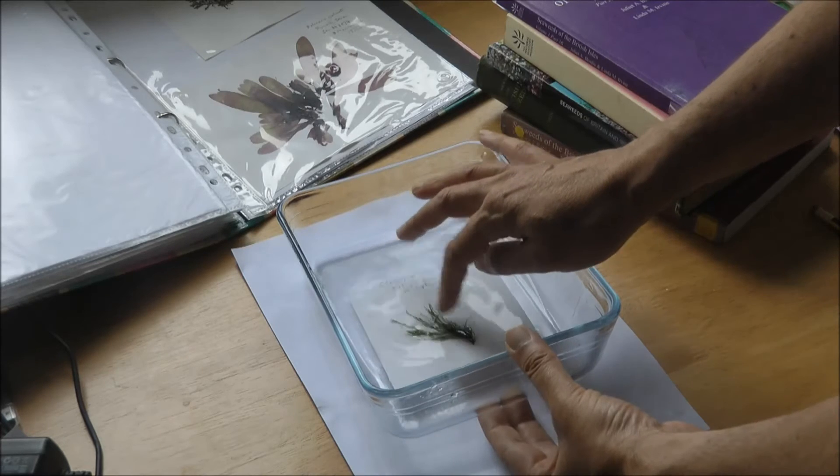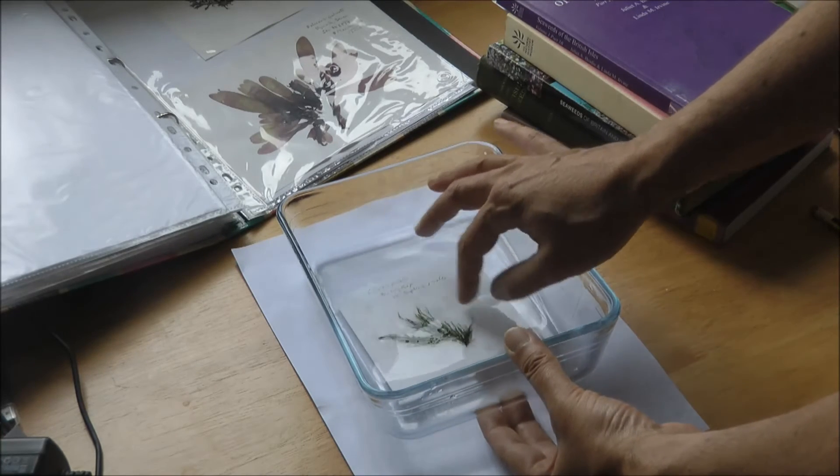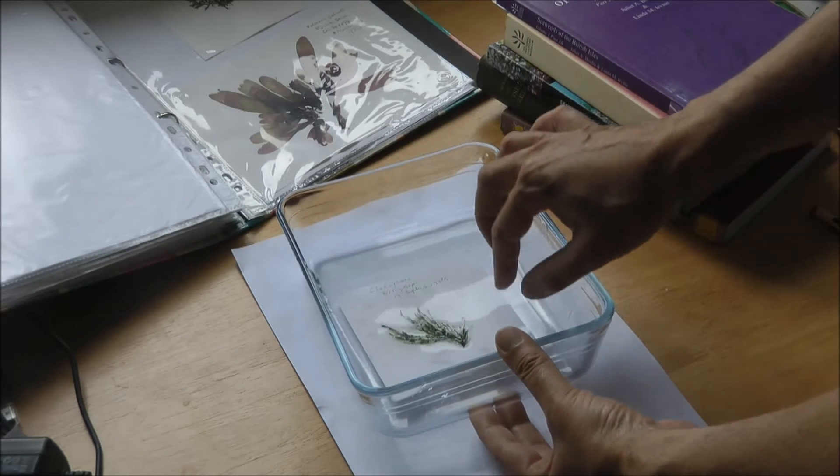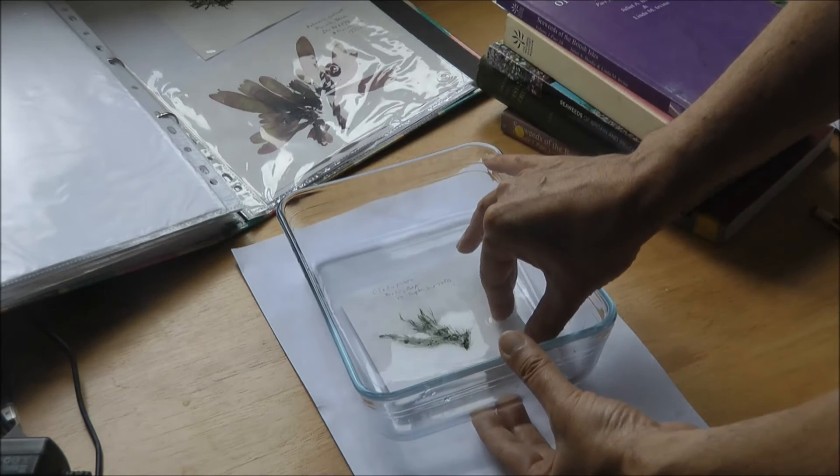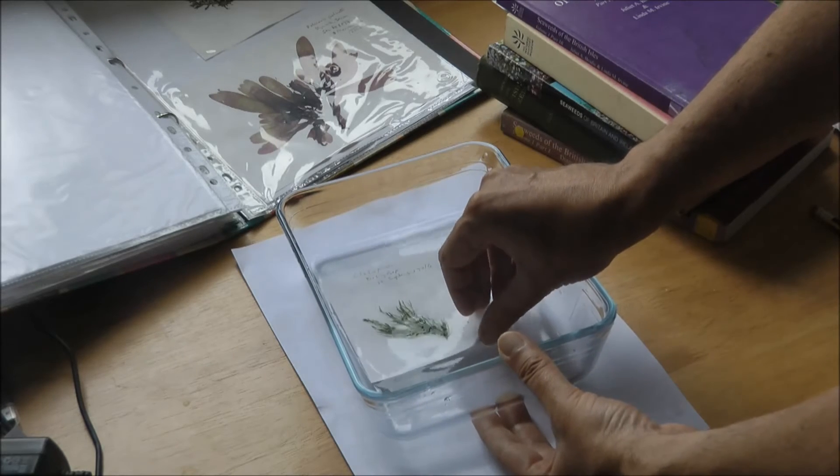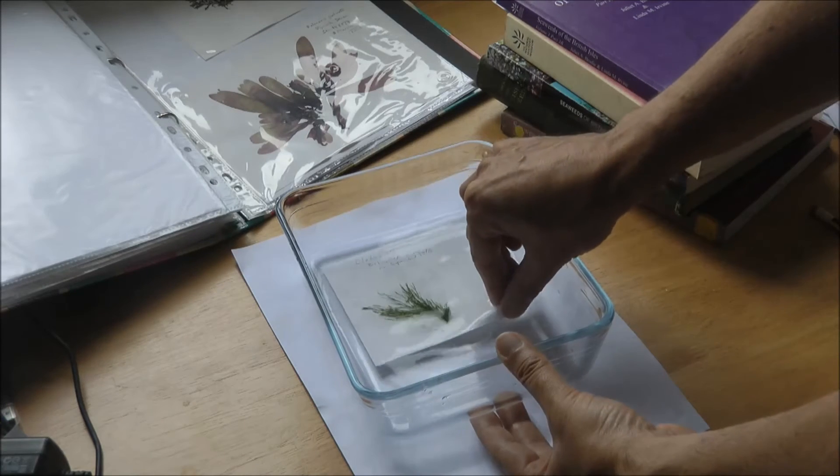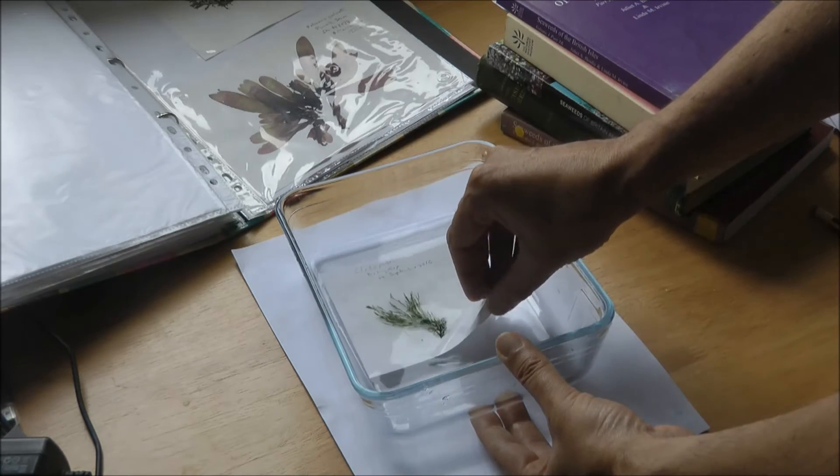And gently with fingers or tweezers if you've got them, try and lay out the seaweed so that it best displays its main features. You can see the shape of the fronds and everything like that. You may need to chop some bits off if it's a particularly big and chunky specimen just to get it to display better.